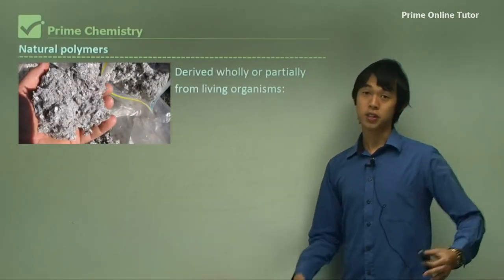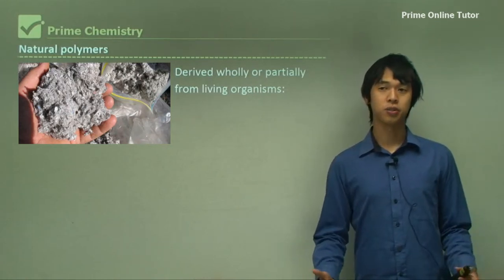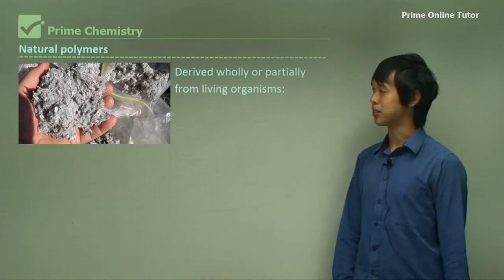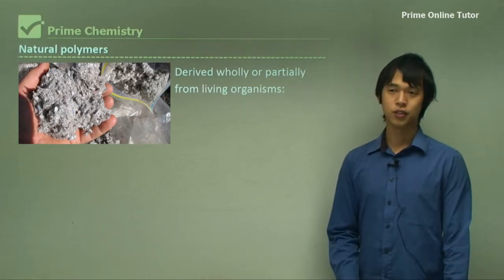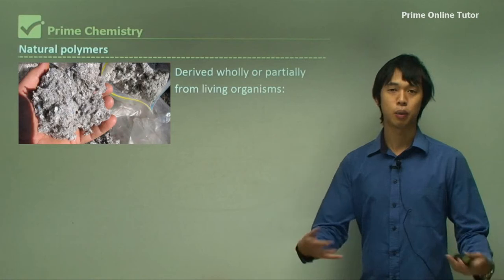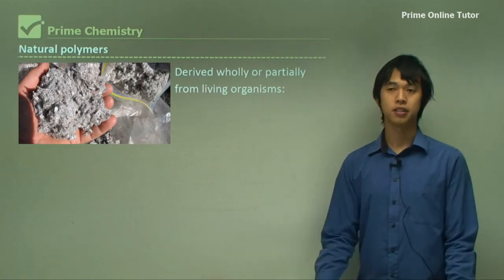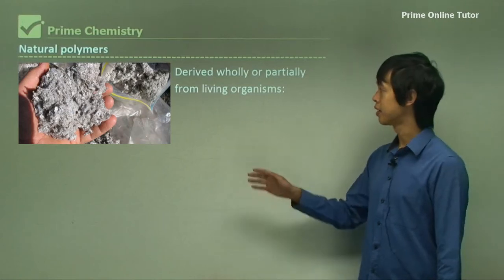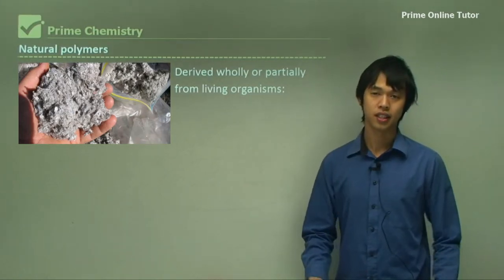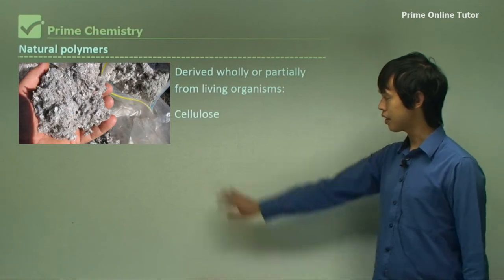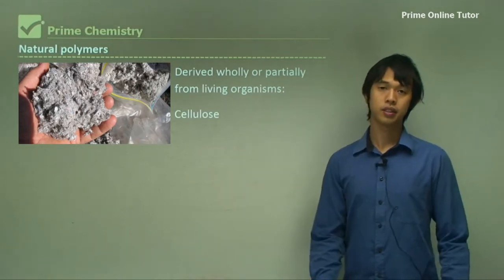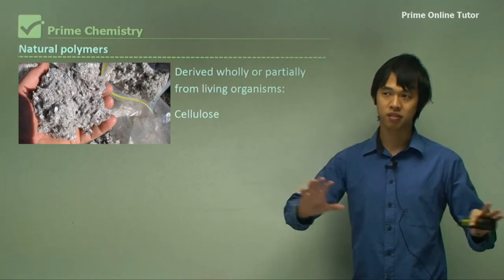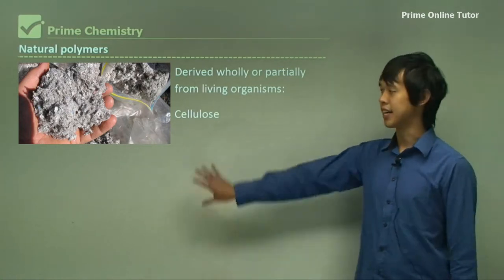Natural polymers also exist. Cellulose — the fibrous part of a plant — is a natural polymer. If you touch a house plant, you're touching a natural polymer. These come from living organisms, which is why they're called natural. Cellulose is probably the most visible natural polymer we encounter.